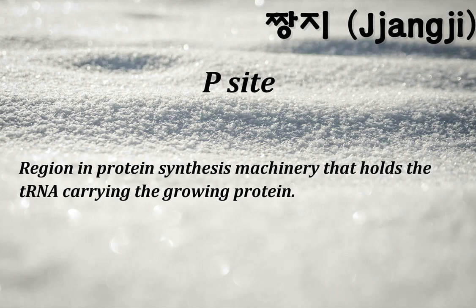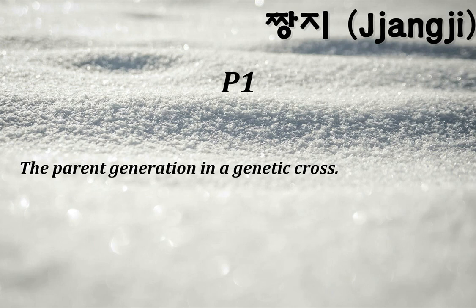Oxytocin: hormone that stimulates uterine contraction and milk ejection for breastfeeding. P site: region in protein synthesis machinery that holds the tRNA carrying the growing protein. P1: the parent generation in a genetic cross.